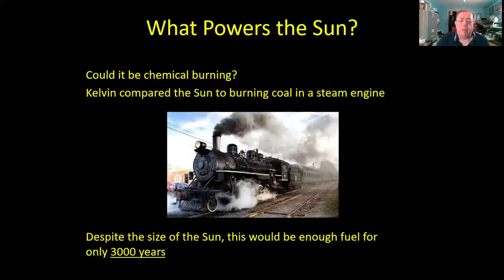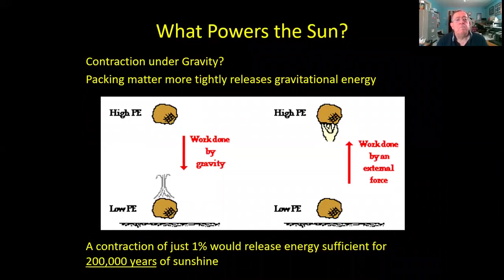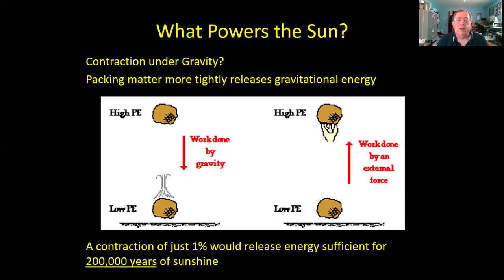He turned to the other force they knew about—gravity—realizing that contraction and things falling under gravity release energy. An object let to fall has work done on it by gravity, picking up speed, and then dumps all that energy as heat when it hits the ground. He realized that a contraction of the sun by just one percent would release enough gravitational energy to power the sun for 200,000 years—a really quite long time, much longer than you could get from burning that mass of coal.